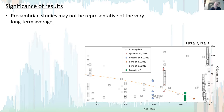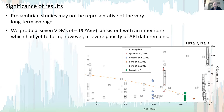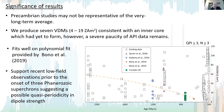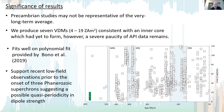It's important to note that Precambrian studies may not be representative of the very long-term average because they may capture a temporally or spatially limited anomaly. However, we produced seven VDMs ranging from 4 to 19 ZAm², consistent with an inner core that had yet to form, though we note the severe paucity of paleointensity data remains. Our new data fit well on the polynomial fit provided by Bono et al. 2019 and support low field observations prior to the onset of three Phanerozoic superchrons, suggesting a possible quasi-periodicity in dipole strength, with lows preceding each of the three superchrons.